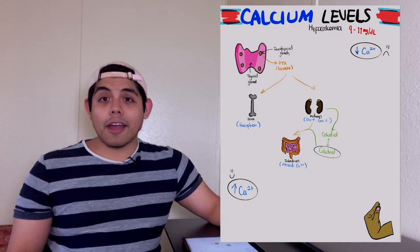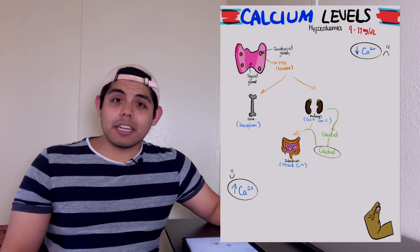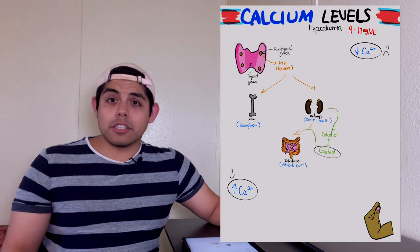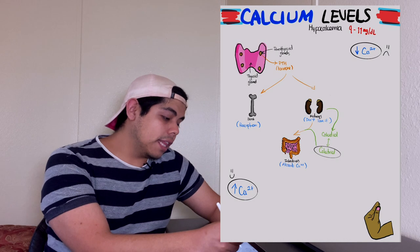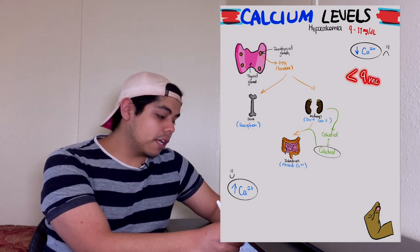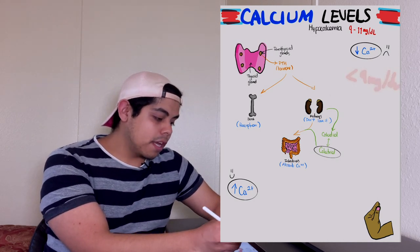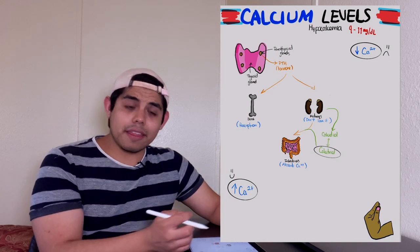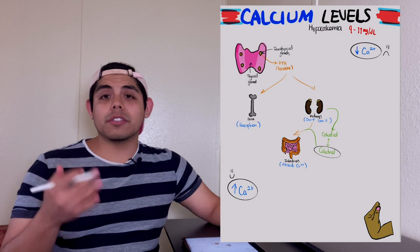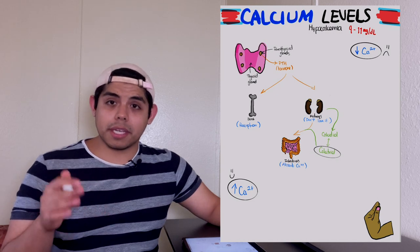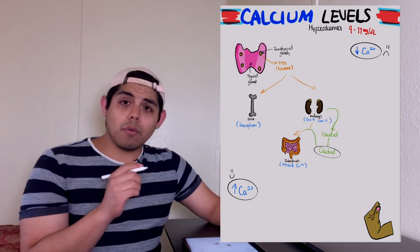Normal levels are 9 through 11 milligrams per deciliter. Let's get into it. Hypocalcemia means not enough calcium in the blood, so the calcium level is going to be less than 9 milligrams per deciliter. This is a bad thing because it can cause certain types of symptoms that I will explain later.